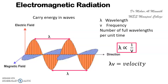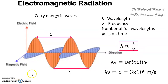For every wave, the product of lambda and frequency is a constant equal to its velocity. For light, that is 3 × 10⁸ meters per second. So remember these terminologies.